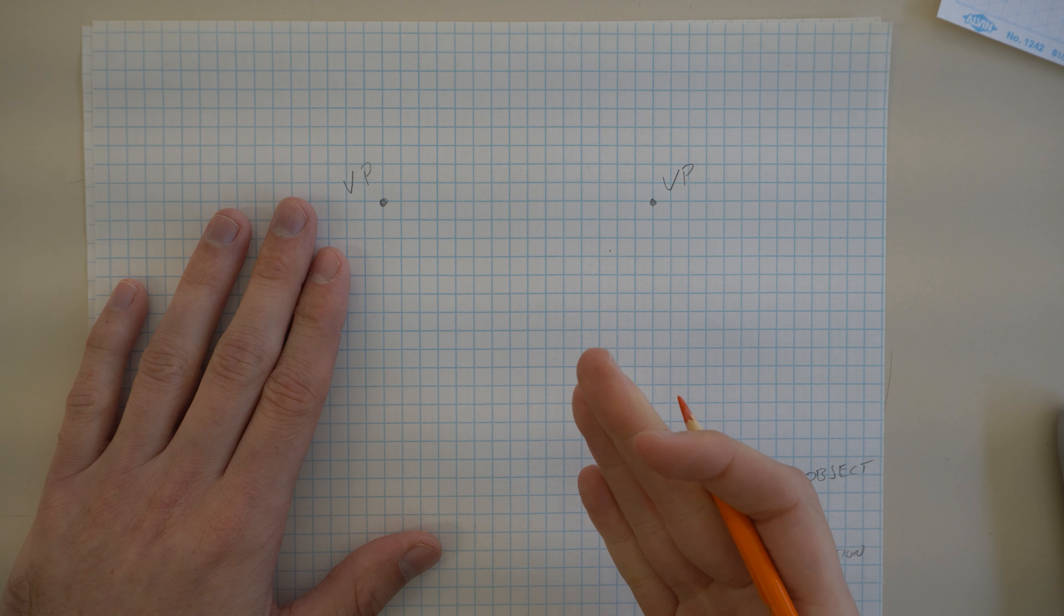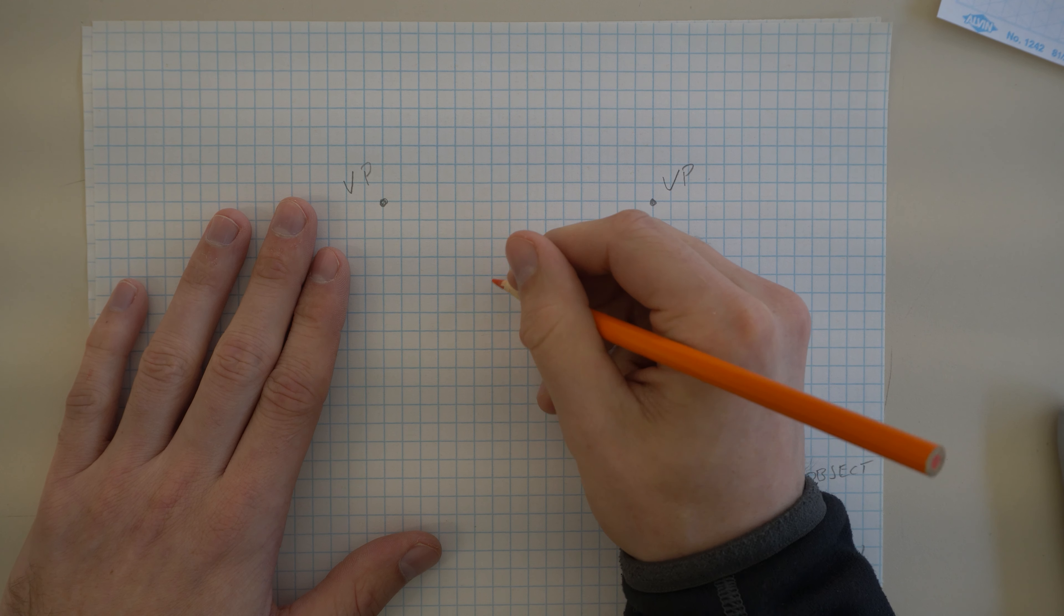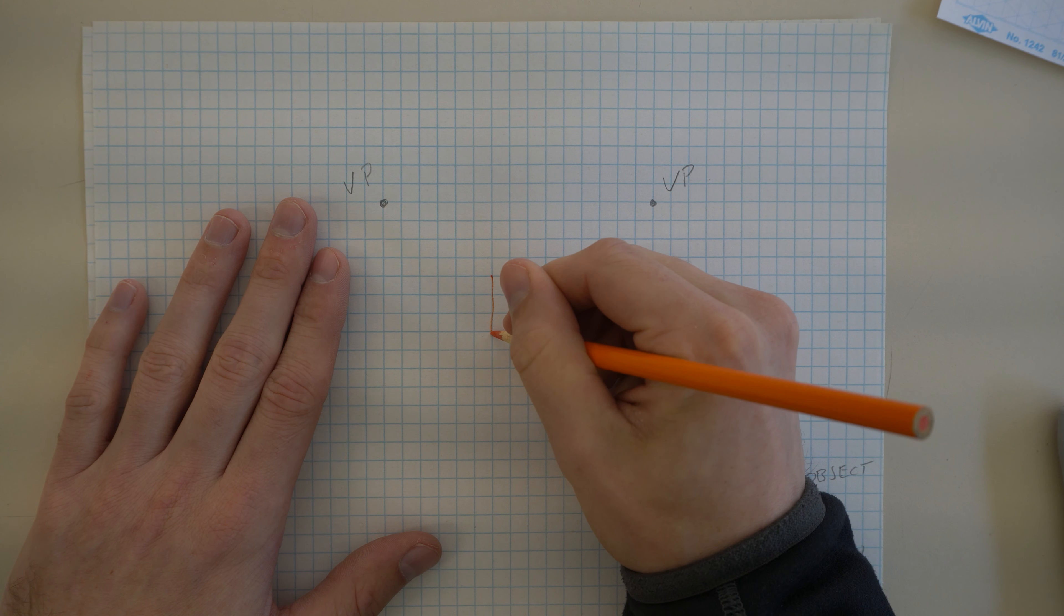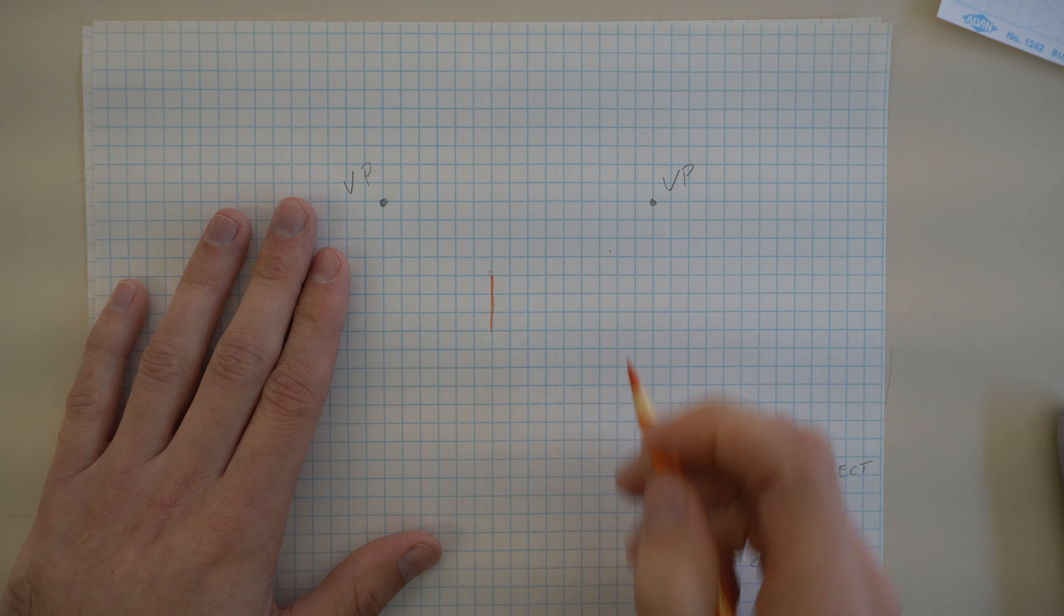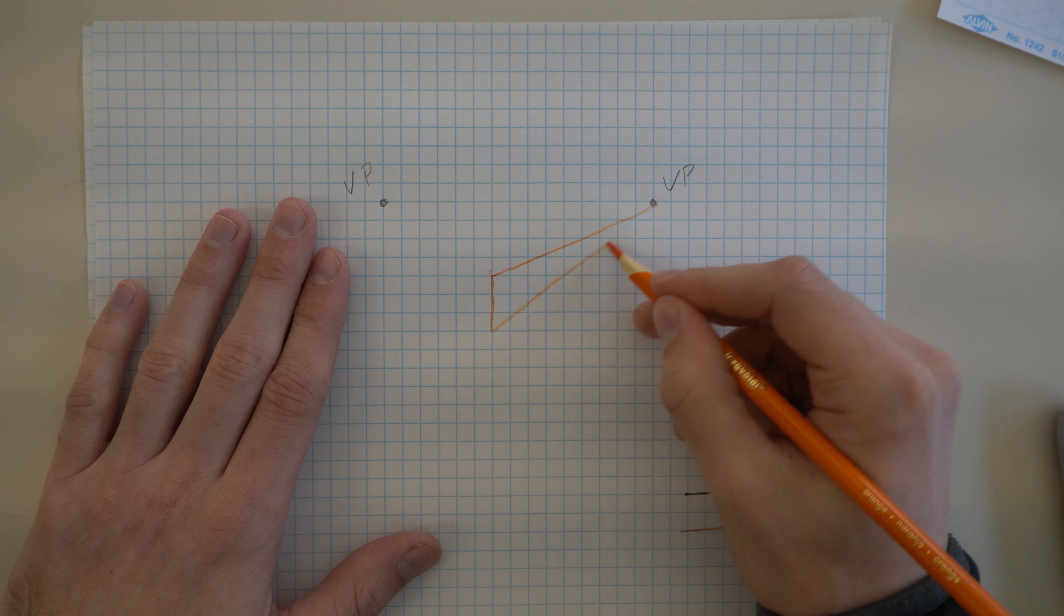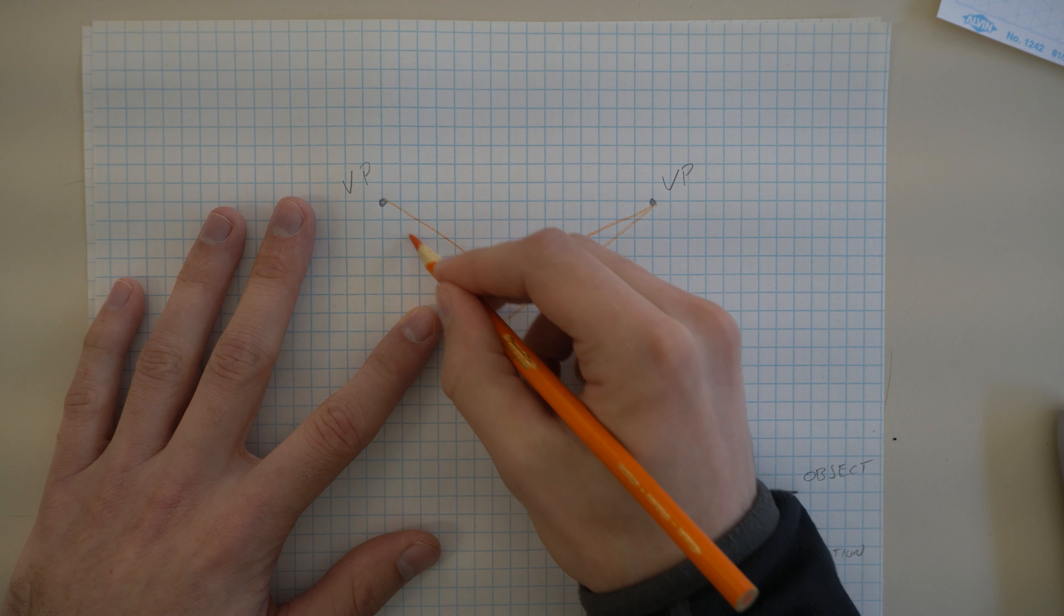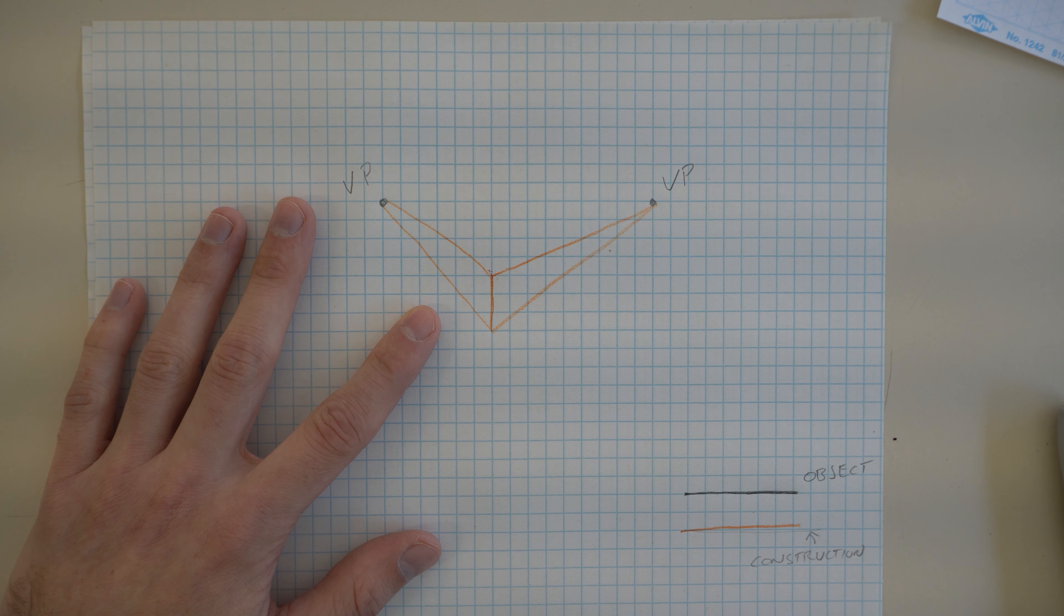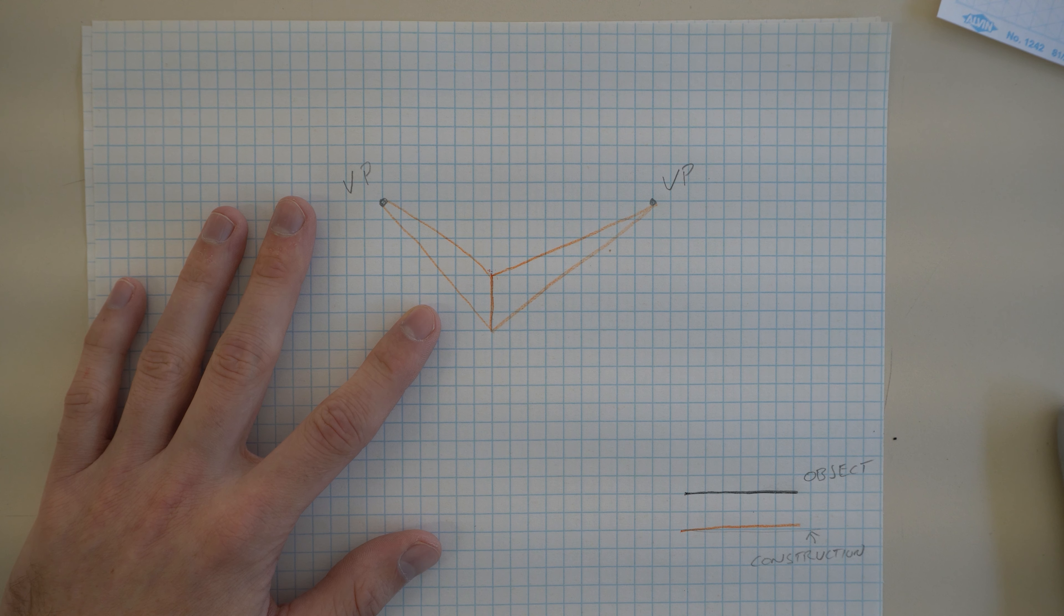So I'm just going to start the basic box and then I'll do something perhaps a little bit more complicated. To start a two-point perspective, we just start with a line. And that line is going to go to each of our vanishing points. Like so. So this is the front and the side of the box.